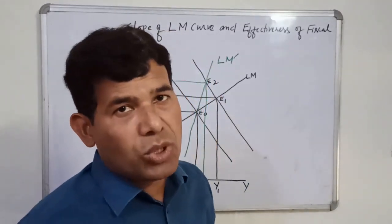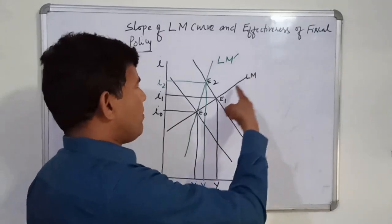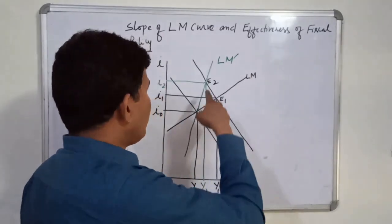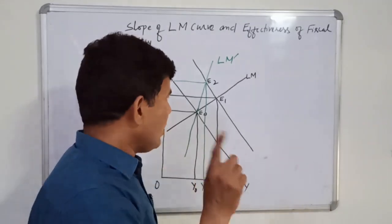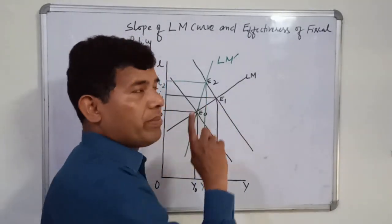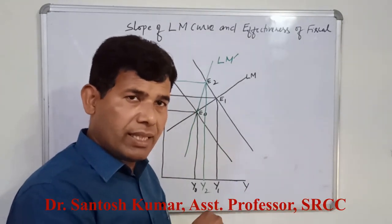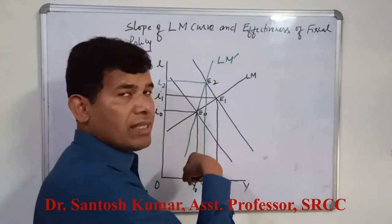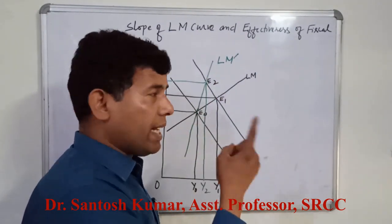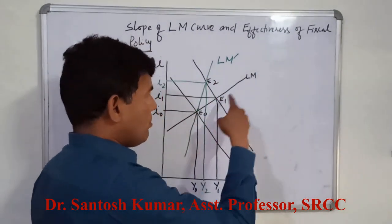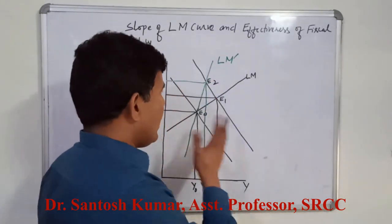Now here we have two cases of the LM curve: one where the LM curve is flatter and another where it is steeper. Recall: if K rises, the slope of the LM curve rises; if K falls, the slope falls. If H rises, the slope of the LM curve falls; and if H falls, the slope of the LM curve rises.